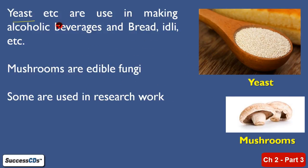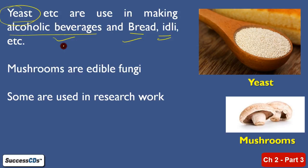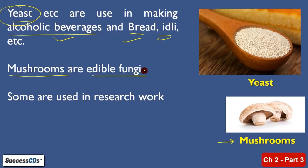Yeast is used in making alcoholic beverages, bread, idli, etc. Yeast is a kind of fungi which is used in many places. You can make alcoholic beverages, bread, idli, and more using yeast. Yeast is commonly called khamir — your mother may have this in your kitchen. These are mushrooms, that is an edible fungi. There are some fungi that you can eat and actually enjoy eating them.